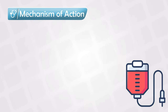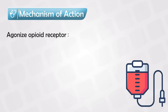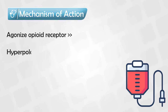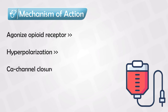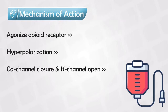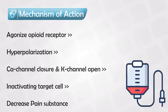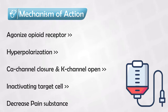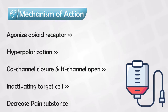The mechanism of action is fairly straightforward — the opioid receptors will be agonized, and this results in cell hyperpolarization. This leads to the opening of the potassium channels and the closure of the calcium channels, and thus the target cell will be inactivated, decreasing the release of the pain substances and the molecules that cause pain.